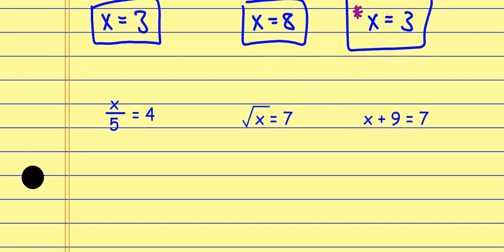If I look at X divided by five, think about what's the opposite of dividing by five — it's multiplying by five. Whatever I do to one side of the equation, I have to do to the other side. This is like over one, so this is like saying five divided by five, which is one. So one times X is X. Over here, five times four is 20. And that's it.